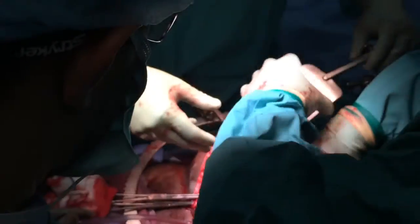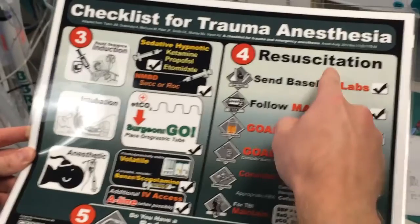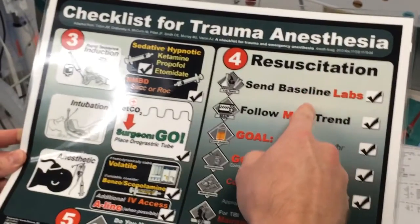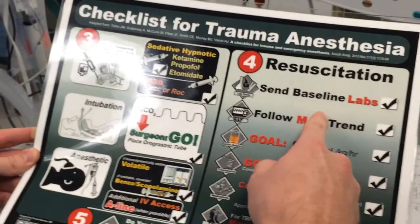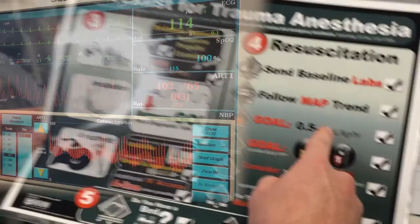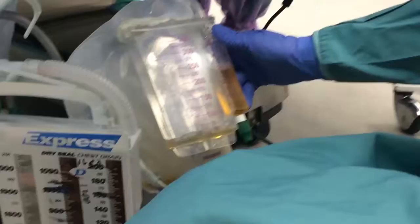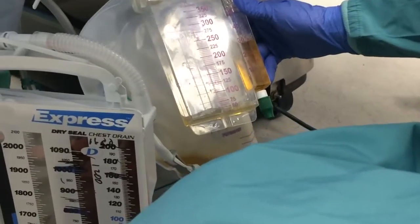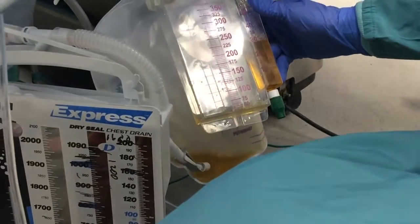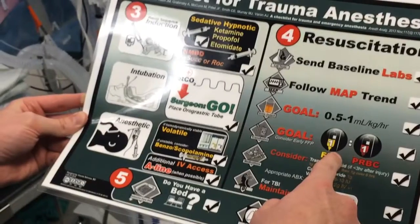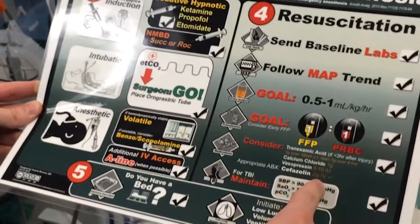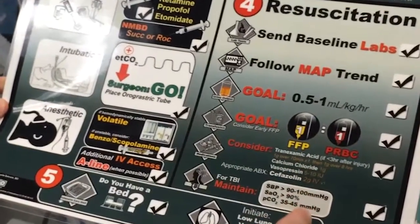Section four illustrates the essential steps to be performed during resuscitation of the patient: sending baseline labs, following trends in mean arterial pressure, tracking urine output to 0.5 to 1 milliliter per kilogram per hour, and transfusion of PRBCs and FFP in a one-to-one ratio.